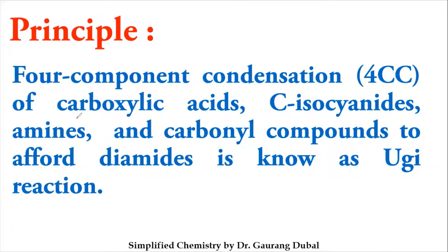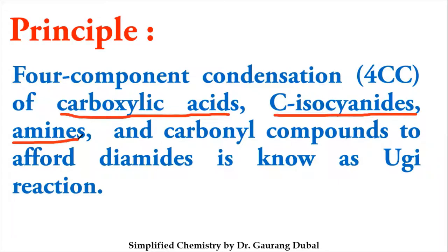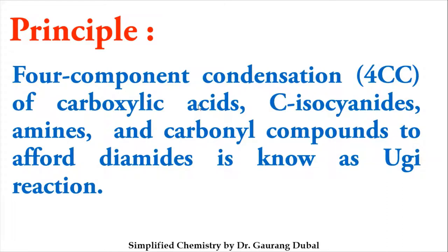The four components used in this reaction are: first, a carboxylic acid; second, an isocyanide compound; third, an amine; and fourth, a carbonyl compound. The carbonyl compound can be either an aldehyde or a ketone — it doesn't matter, as we are dealing with a C=O carbonyl only. Condensation of these four components results in a diamide as the product. This reaction is known as the Ugi condensation or Ugi reaction.